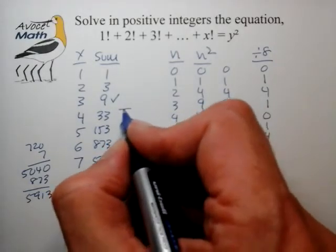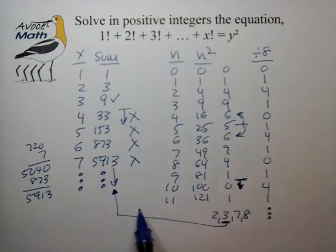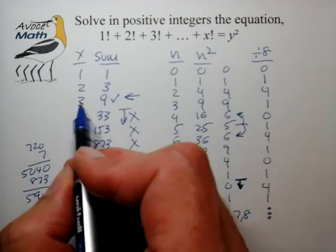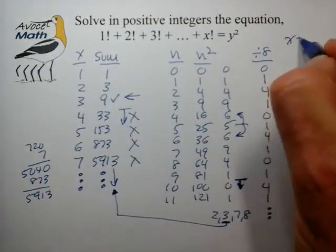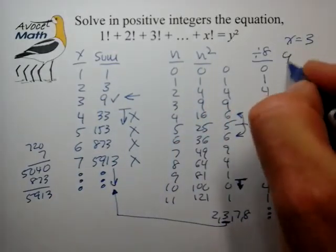And so it appears as though from this point on we really don't have the form of a square number and there is no solution beyond 4 factorial and in fact the only solution is x being 3 and y of y squared, y being 3 as well.